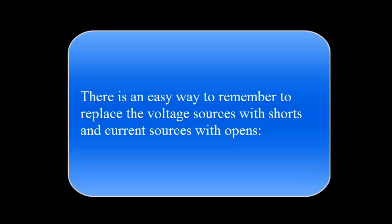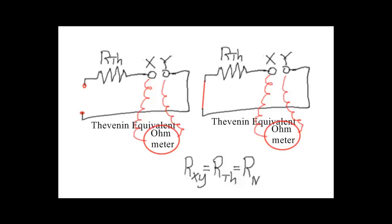There's an easy way to remember to replace voltage sources with shorts and current sources with opens. Here we have two Thevenin circuits with the voltage sources removed from both — the voltage source is replaced with an open on the left and a short on the right. In which circuit does the ohmmeter measure R Thevenin? The one on the left? No. The one on the right? Yes. And that's the easy way to remember to replace voltage sources with shorts.